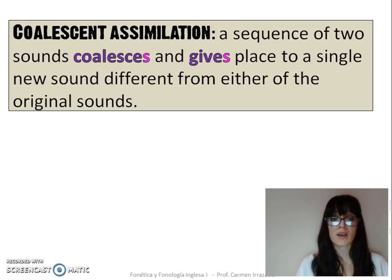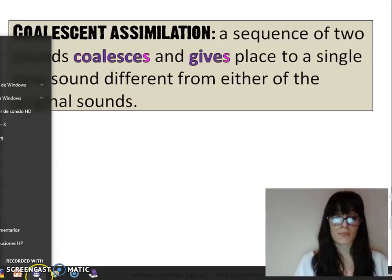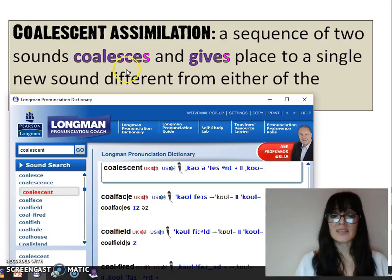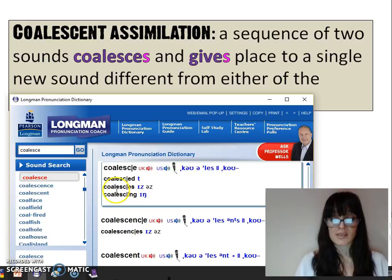When explaining this kind of process, it's important to pay attention to the pronunciation of words. For example, in the case of coalescent assimilation, we are using the adjective coalescent, but later on, we have to use the right form of the verb coalesce, which in this case is coalesces.